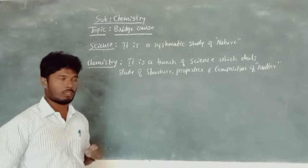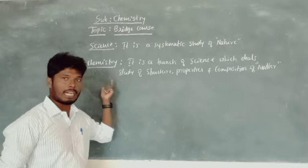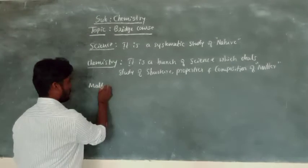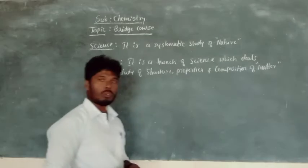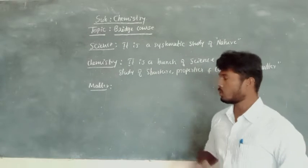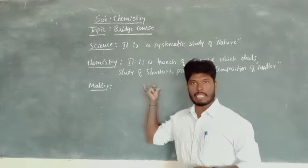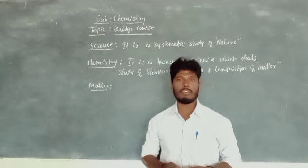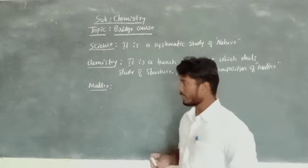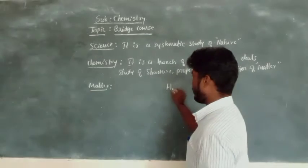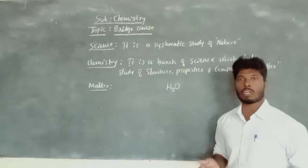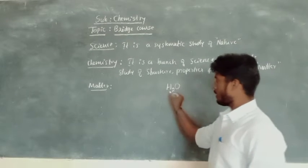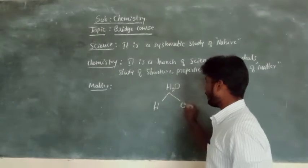Now, what is meant by matter? You know the definition of chemistry and how it originated. But before knowing matter, you should know what is the need of chemistry and where it is observed in our daily life. In our daily life, we are taking water every day. That water is made of H2O — it contains two elements: one is hydrogen and one is oxygen. These two are present in the periodic table.